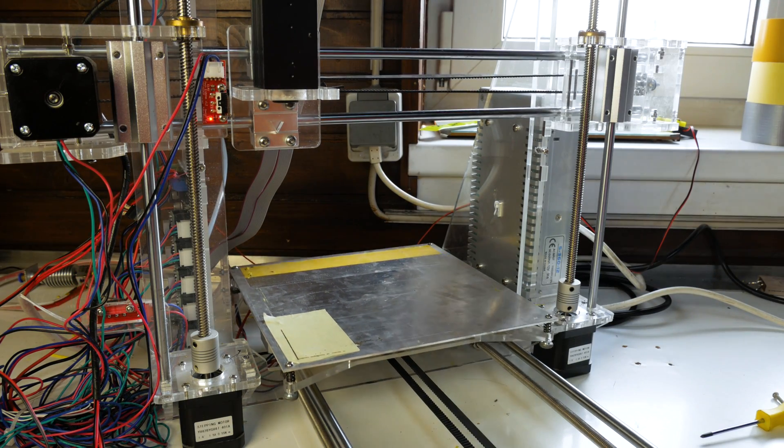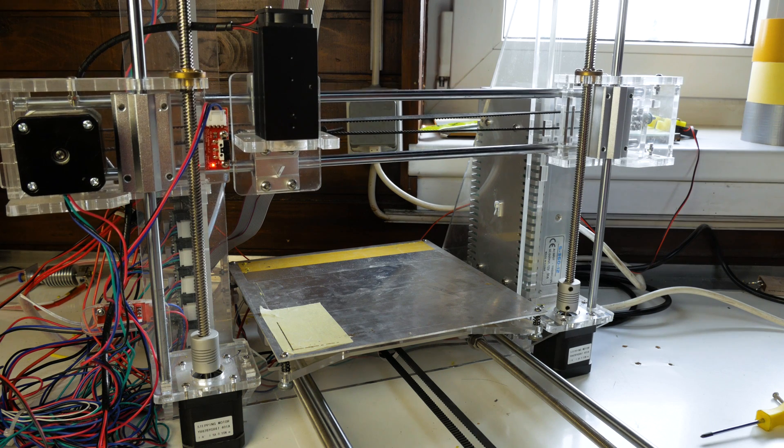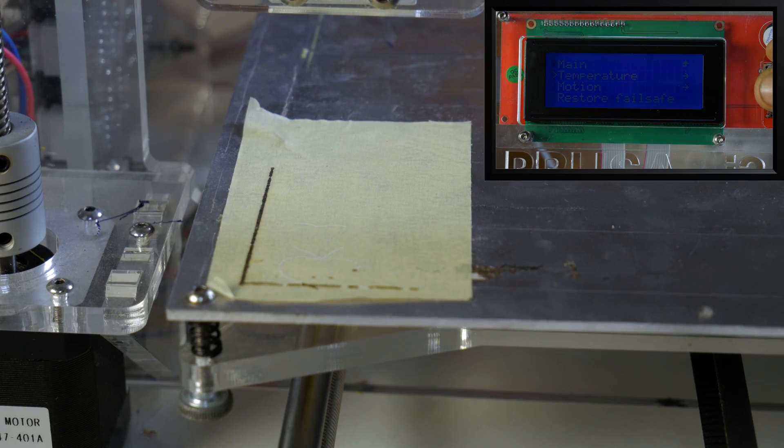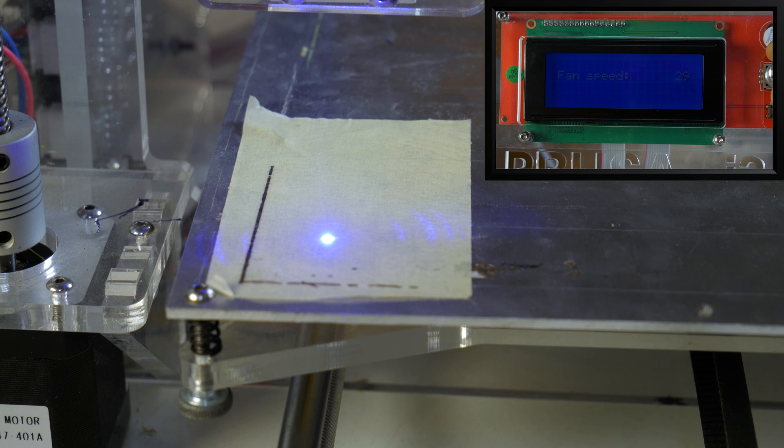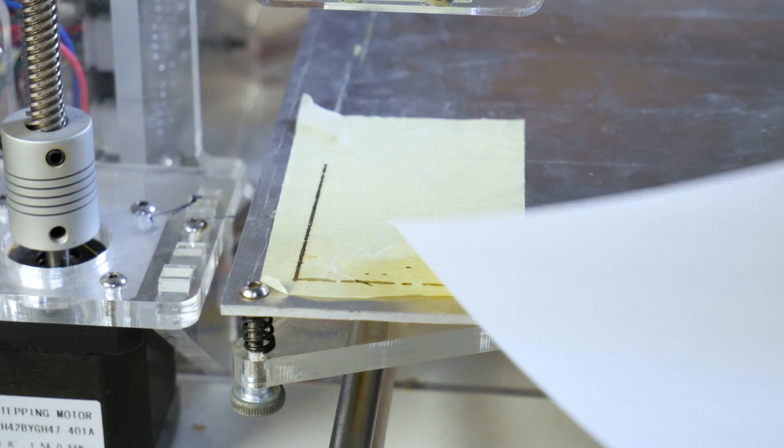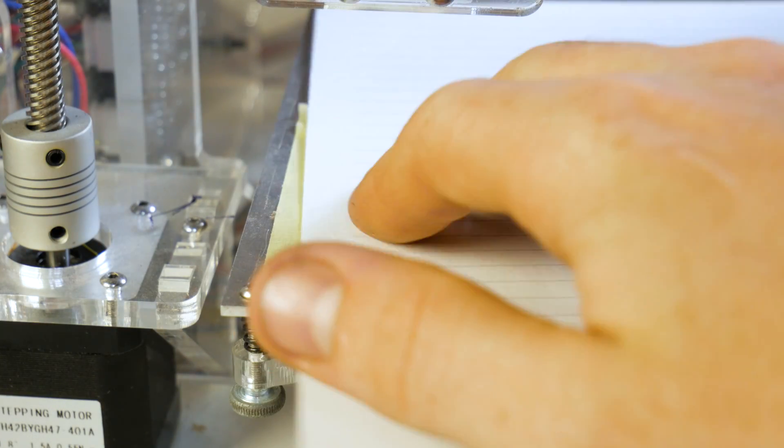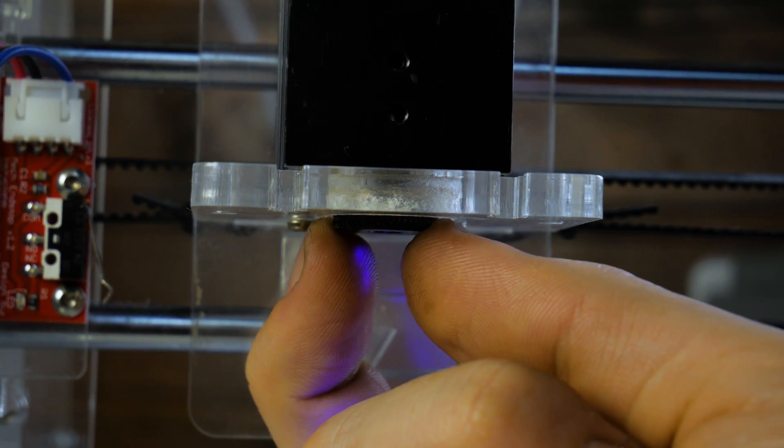Now we can start calibrating the laser by finding the right focus point. Auto home all axes and try to turn on the fan somewhere from 1 to 255. As you can see, the laser is turned off at 0 and outputting maximum power at 255. I would suggest you place a piece of paper on the bed and reduce the power to a minimum so we can better see if our point is in focus. You can adjust that with a small knob on the laser itself.